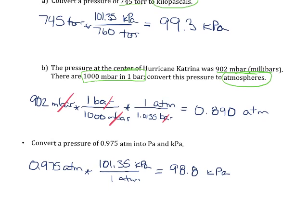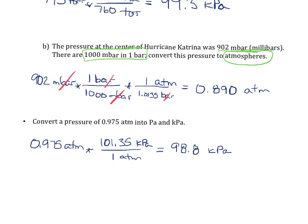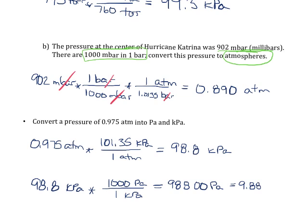And then we can go ahead and use our metric prefixes to convert that into regular pascals. So we know the prefix kilo means 1,000, that means there are 1,000 regular pascals for every 1 kilopascal. So doing the math here, we're going to get 98,800 pascals, and writing that so that we have three significant figures in scientific notation, 9.88 times 10 to the 4th pascals.